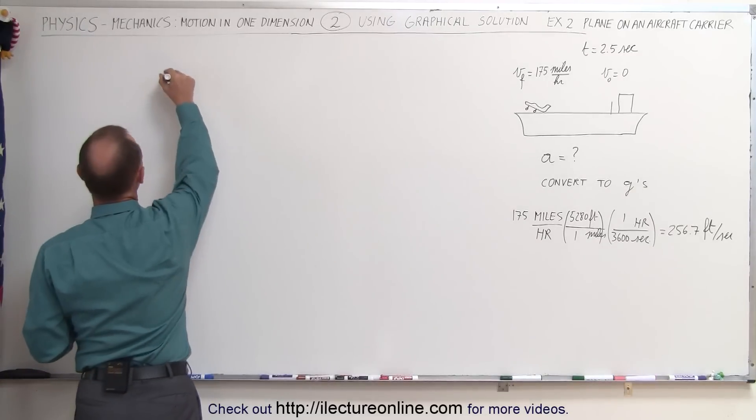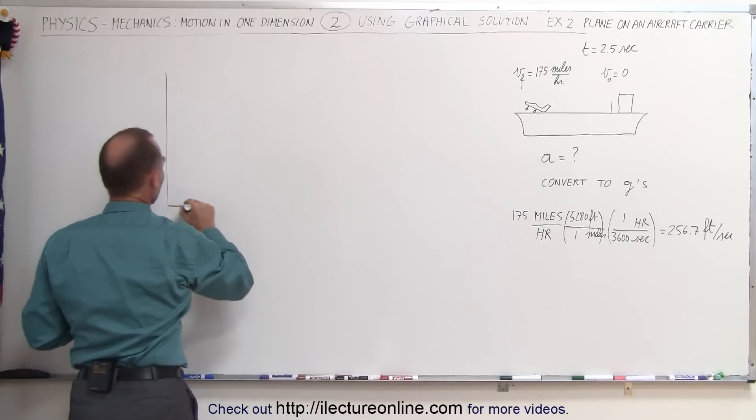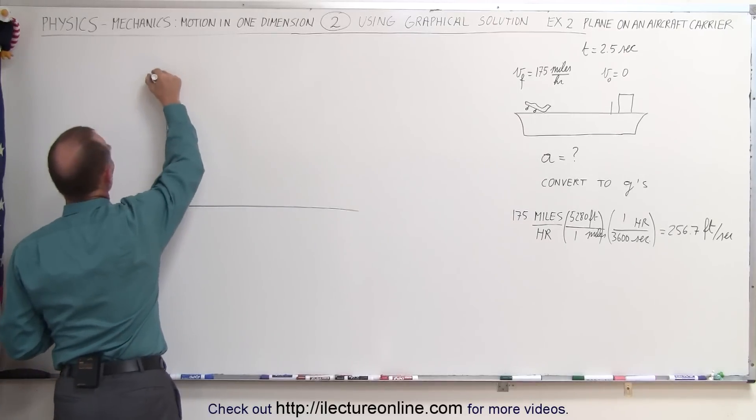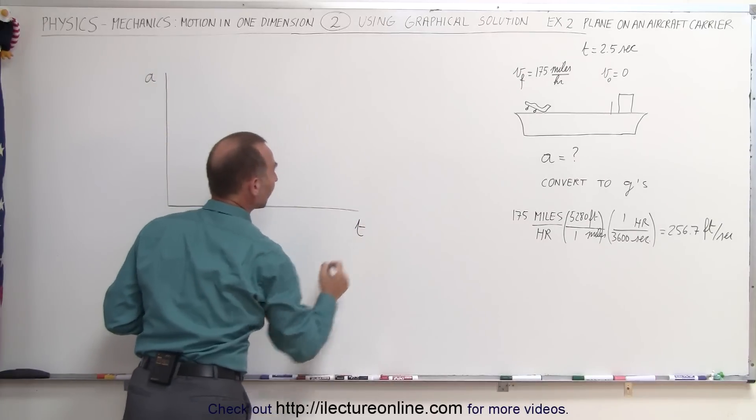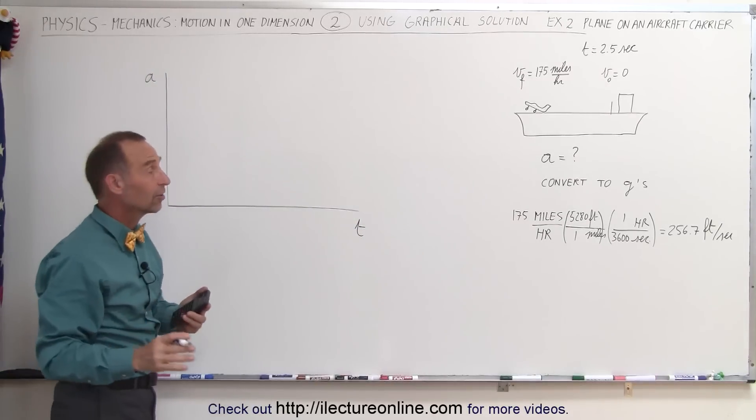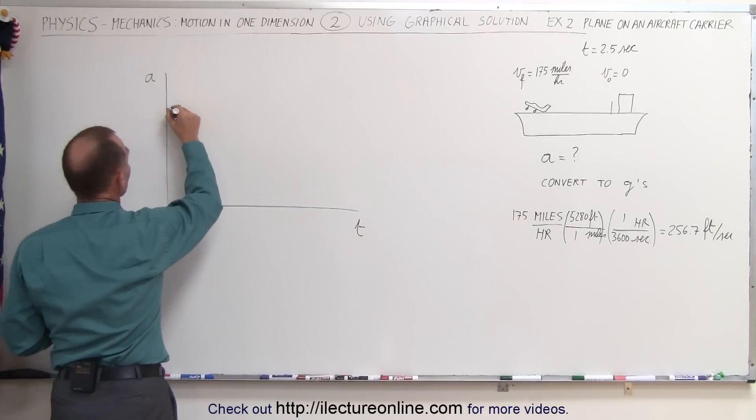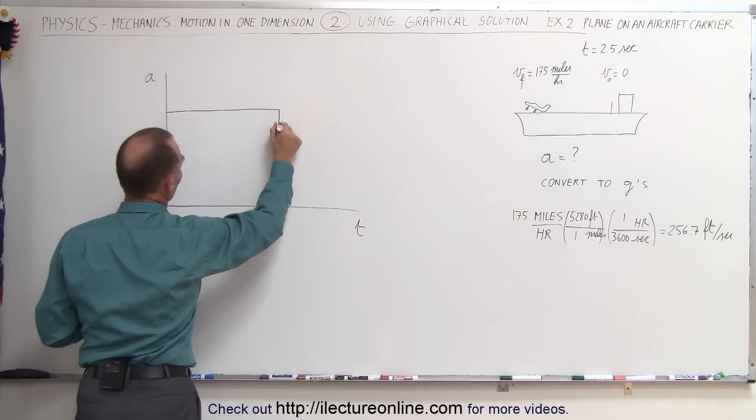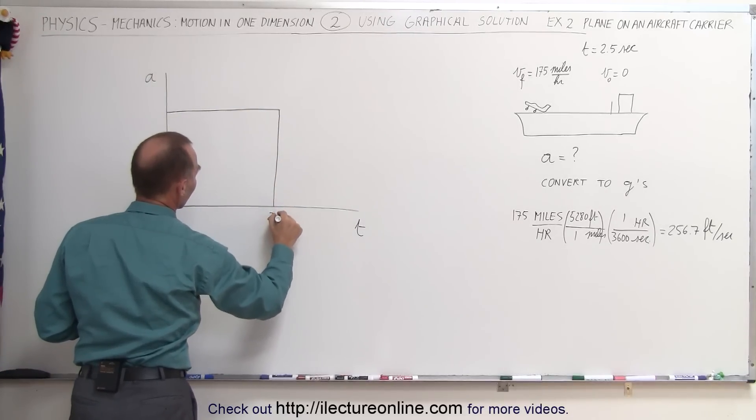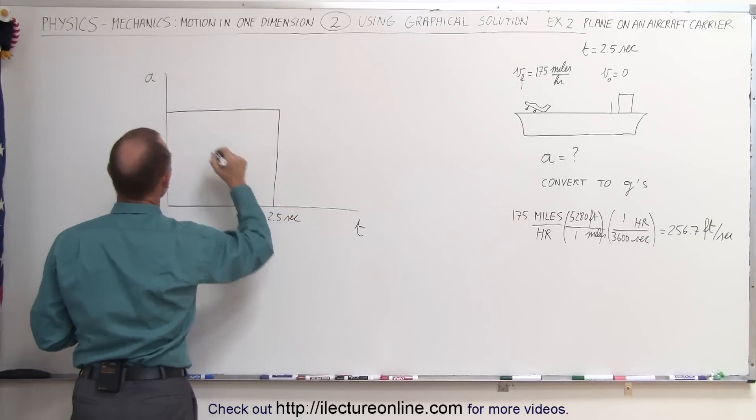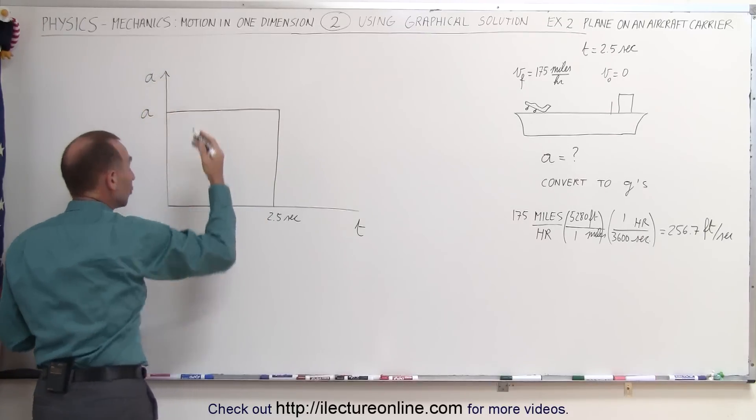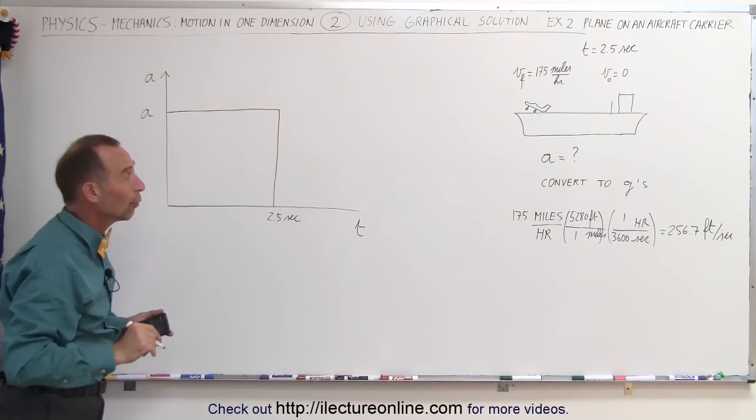What is the acceleration? So we're going to solve that by drawing an acceleration versus time graph. Let's assume constant acceleration. So there's constant acceleration for a period of 2.5 seconds. So time is 2.5 seconds and acceleration is equal to whatever the acceleration is, what we're looking for.